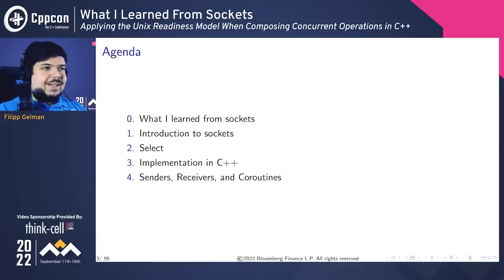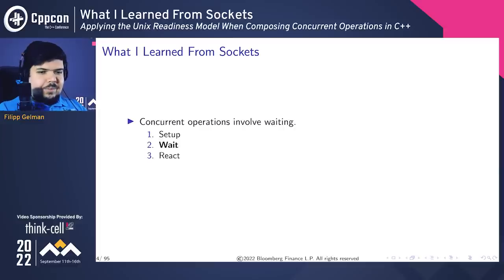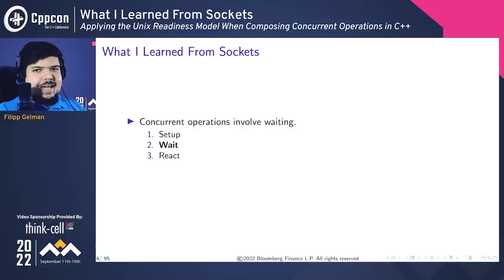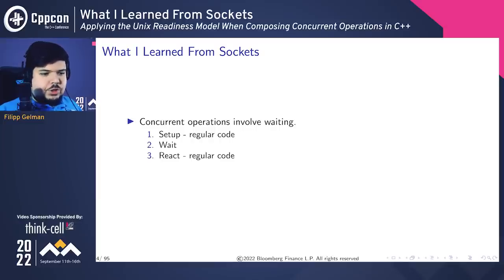But before that, I'd like to kind of start with the answer. What did I actually learn from Sockets? I find that most concurrent code breaks down to three steps. The first step is the initial setup, then the wait, and then after we are done waiting for whatever concurrent thing we're doing, we react to the result. But the stuff before and the stuff after — that's just regular straight-line code. It's the wait that's interesting.